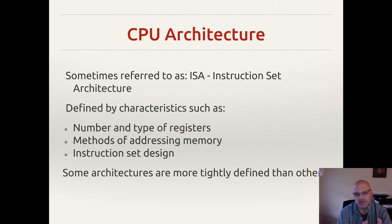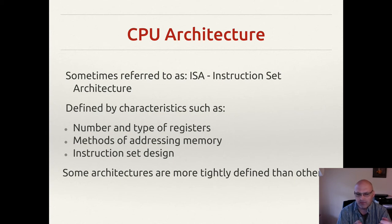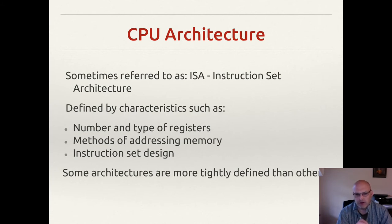We've talked in the past about architecture versus organization. Things like the number of execution units, how we build a pipeline, how much cache there is — that's all decisions we make that have to do with the organization. Why are these things separate? How do we draw that line? The answer lies in how we define the instruction set architecture.